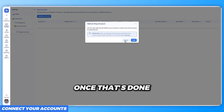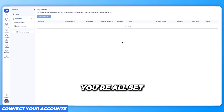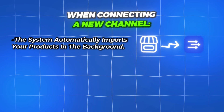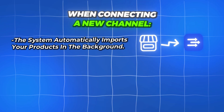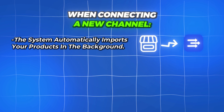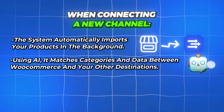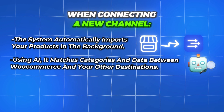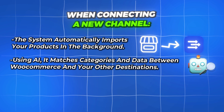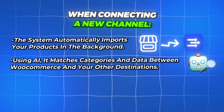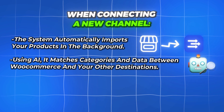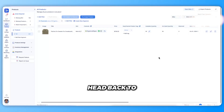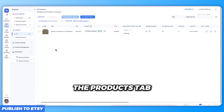Once that's done, you're all set. In the background, Easy Channel automatically imports your Shopify products and uses AI to map your product categories to Etsy categories. This ensures your products are ready to go on Etsy without any manual setup, so all that's left to do is publish the product.